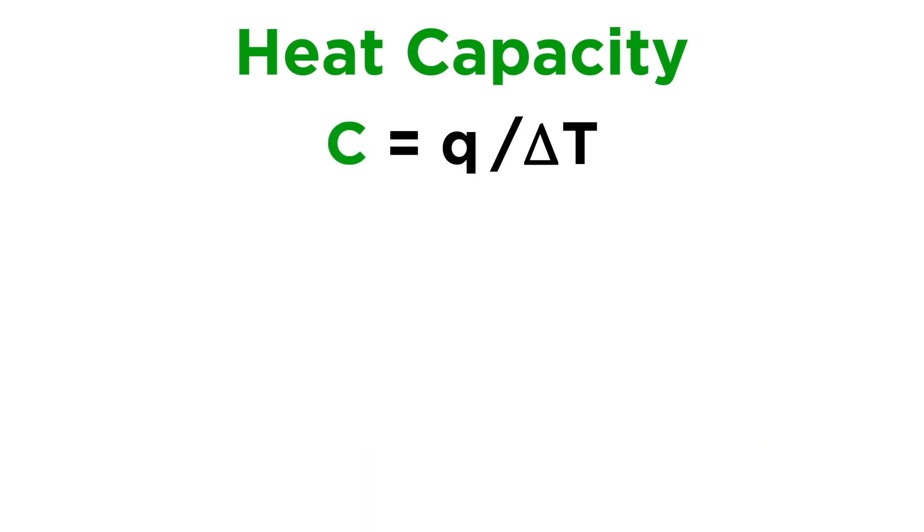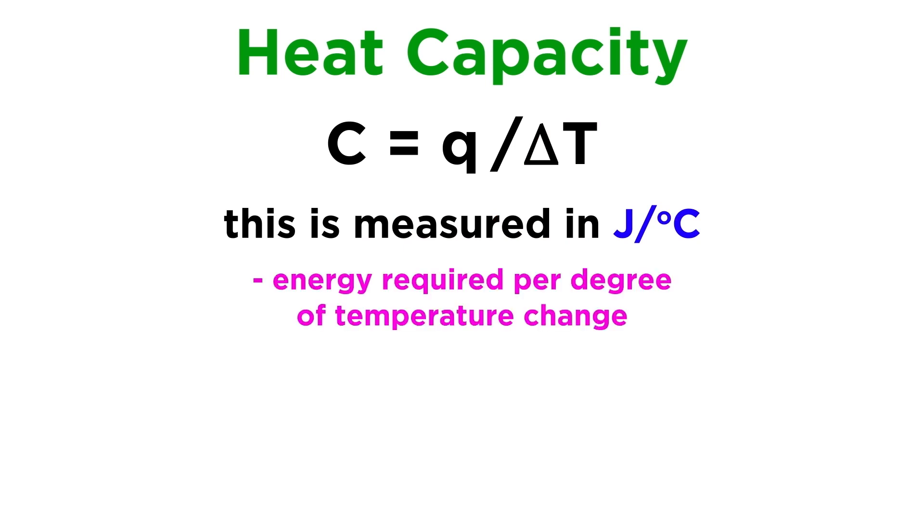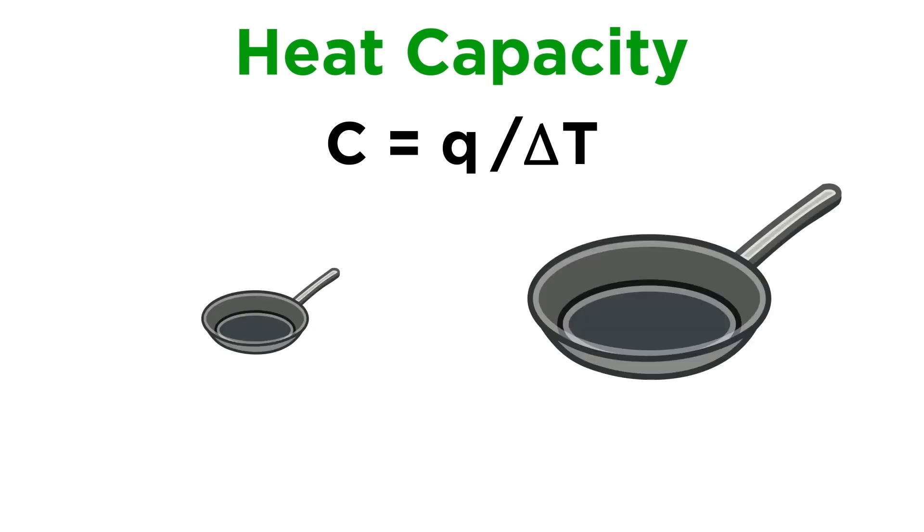The heat capacity for an object can be calculated by the following equation, where q equals heat, and delta T equals the change in temperature of the object. This will give us a value in joules per degree Celsius, or the energy required per degree of temperature change. For example, let's compare two cast iron frying pans. They are made of identical material, but one is five times larger. Therefore, the larger one will have a much larger heat capacity, because there is so much more matter that needs to receive sufficient heat energy so as to raise its temperature.